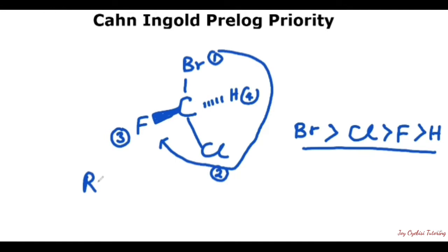This R — the full meaning is rectus, and rectus is a Latin name which means right. So it goes through the right-hand side, and when it is through the left-hand side, it's represented as S, which is sinister, meaning left. This is how you assign configuration for this particular example.